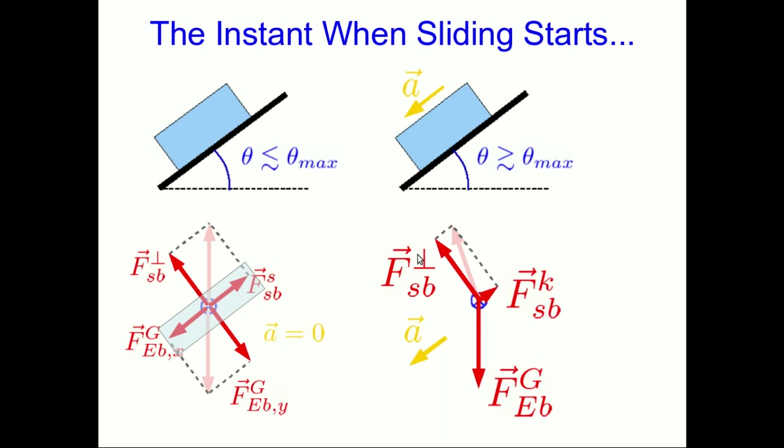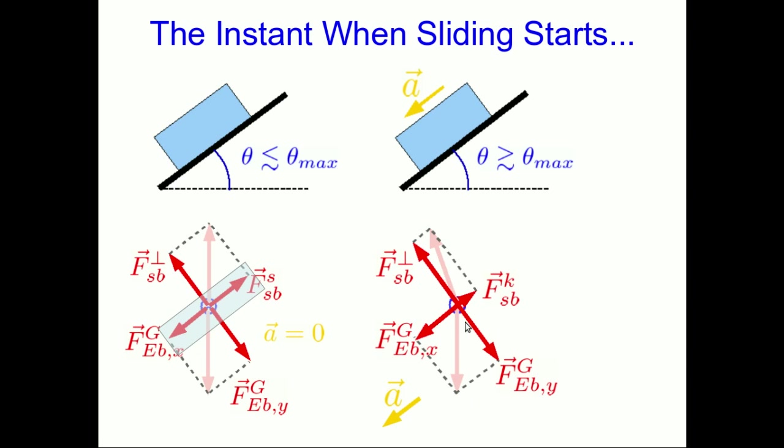So again, we're going to take this free body diagram and I'm going to resolve the gravitational force, decompose the gravitational force into components down the slope and perpendicular to the slope. And let's focus on the part parallel to the slope. Now, the kinetic friction no longer balances the x-component vector of the gravitational force, and that is why the block slides down the slope and accelerates.